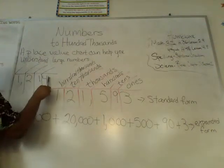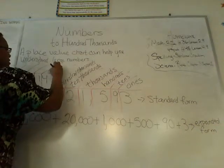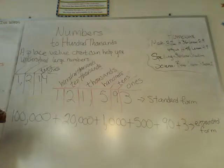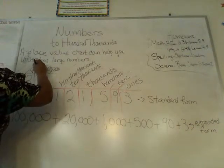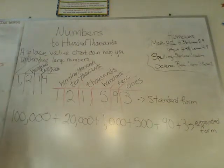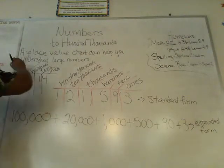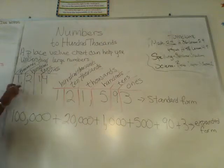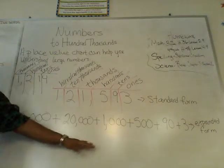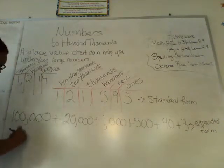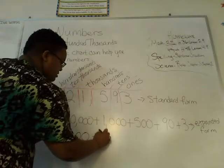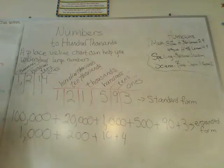Now for Rhode Island's 1,214 square miles — that 4 is where? In the ones place. That 1 is where? In the tens place. Good job. That 2 is where? In the hundreds place. And this 1 is where? Thousands place. So if we wrote 1,214 in expanded form, it would be 1,000 plus 200 plus 10 plus 4. Write that down.